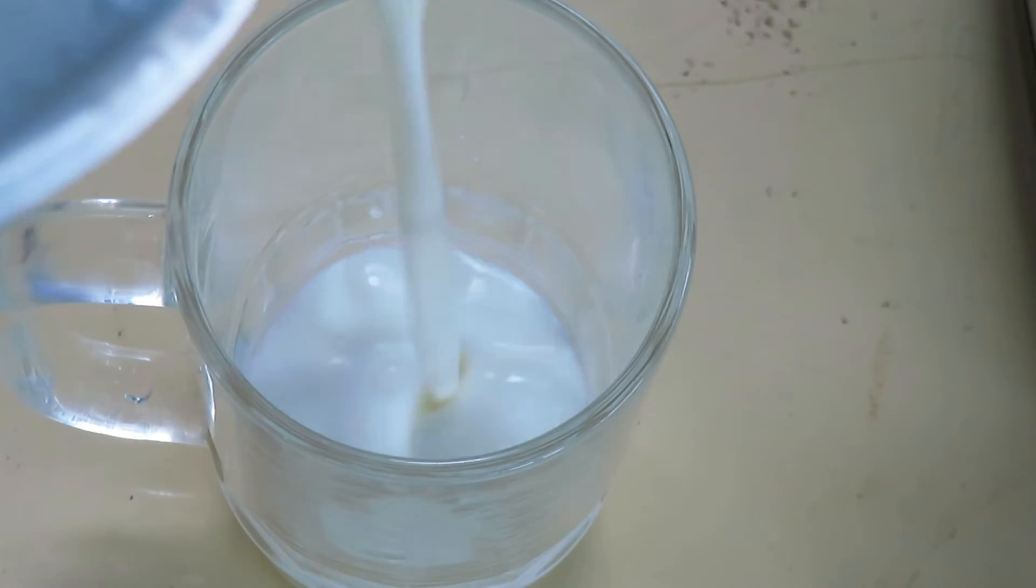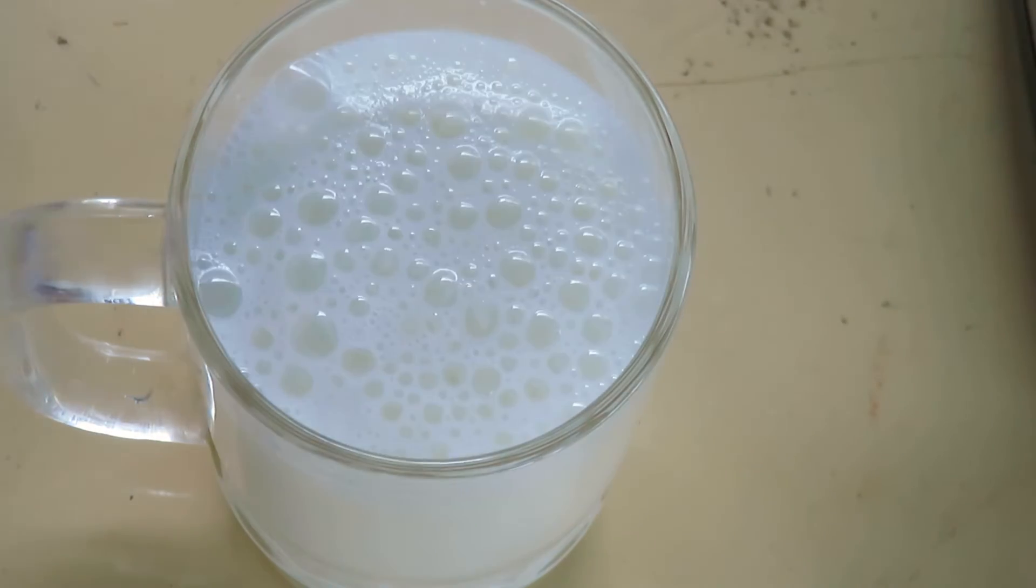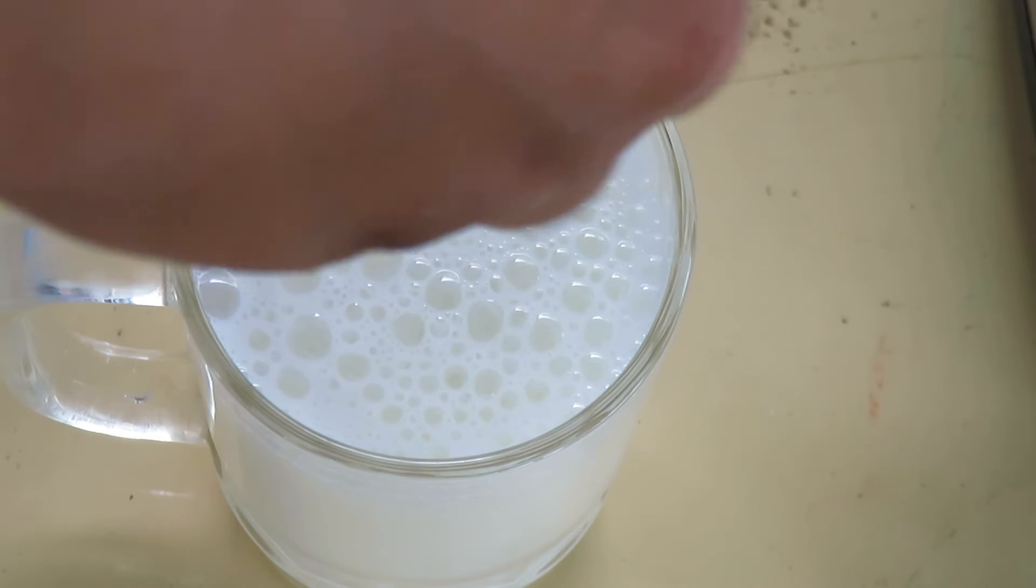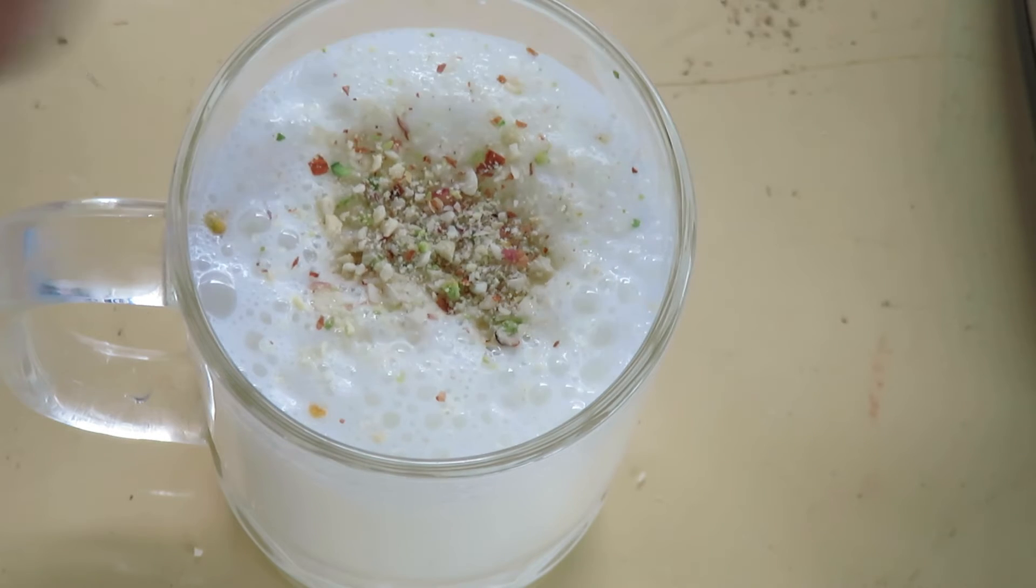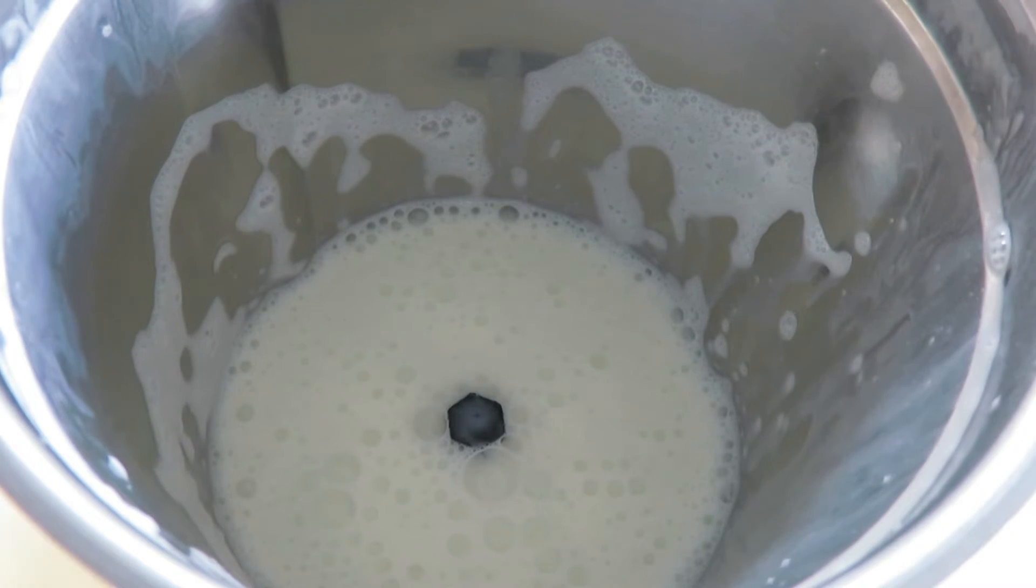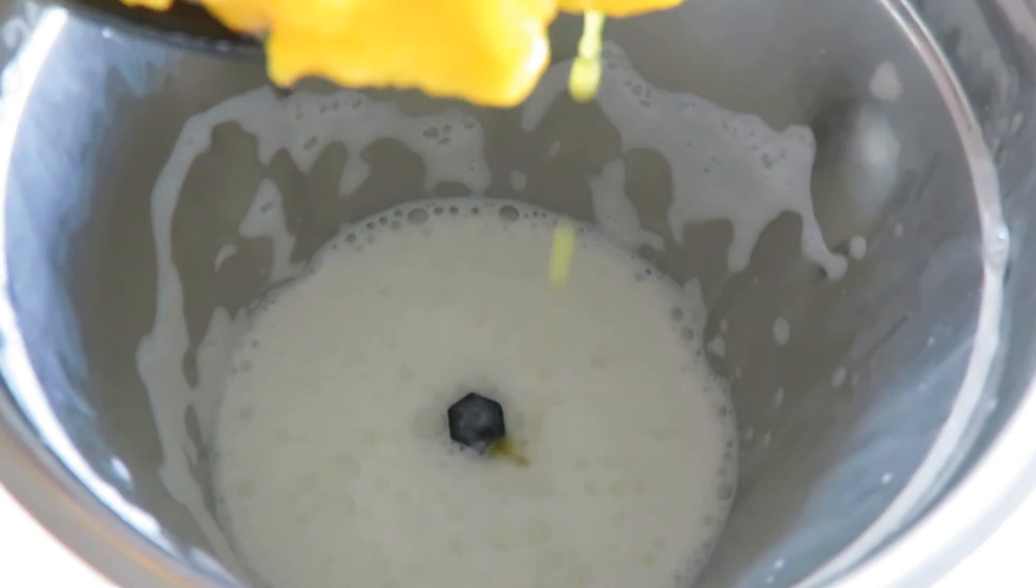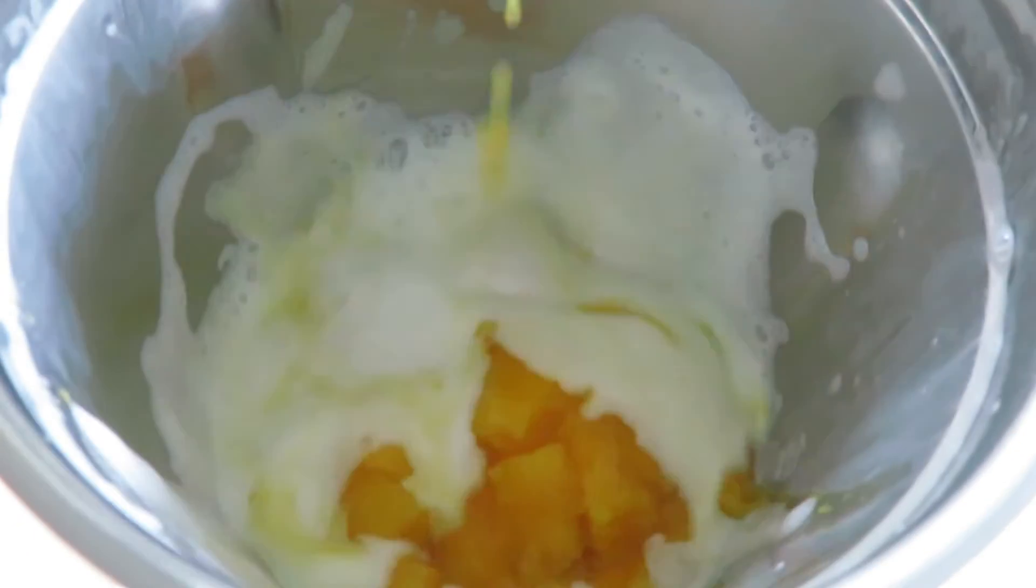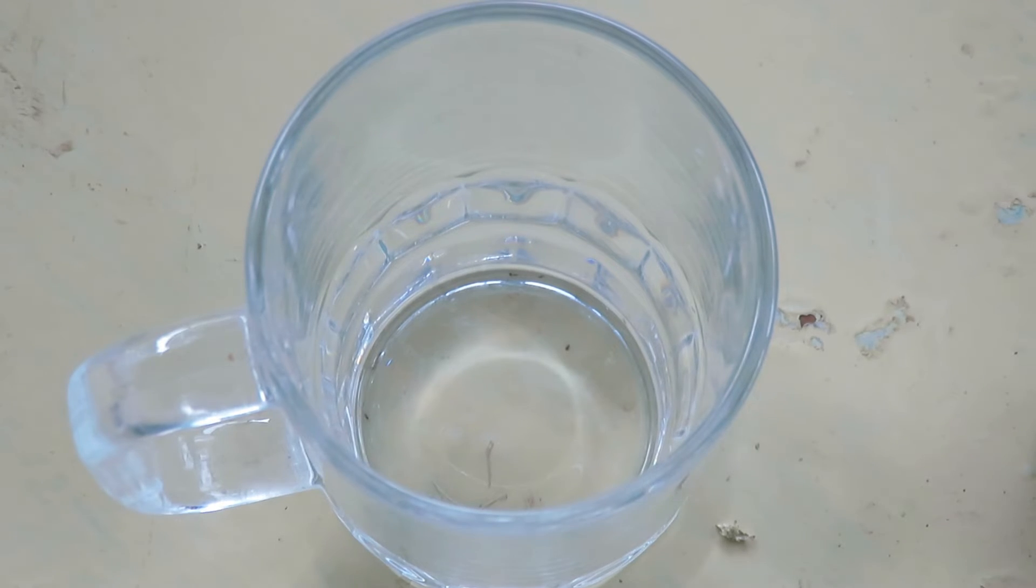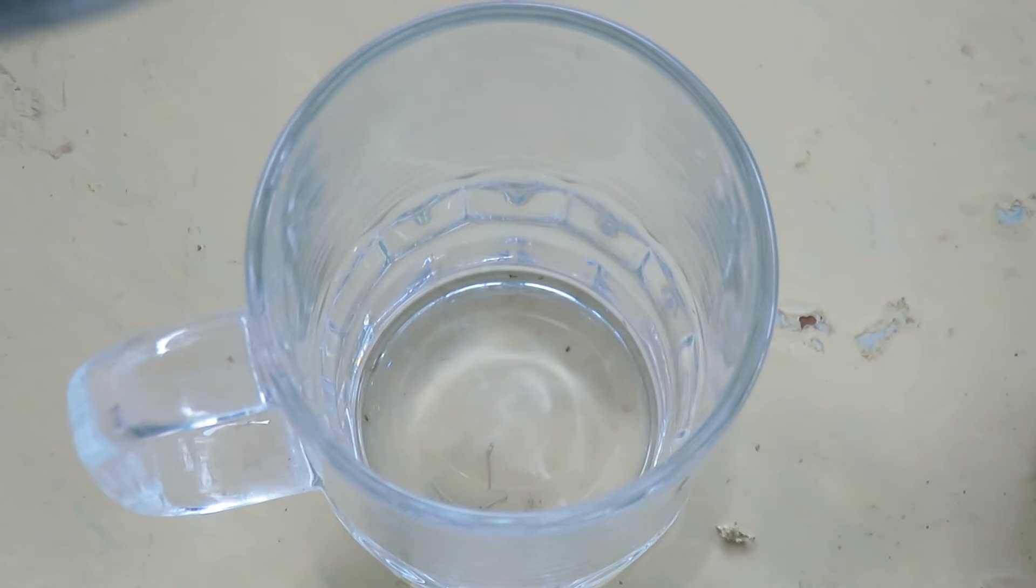In the grinder, I have about one cup of the base batter for the lassi. Let's add some mango pulp - this is half a cup of mango pulp. I'm going to grind this. Now our mango lassi is ready. Let's pour it in the glass and we will garnish it with some saffron strings.